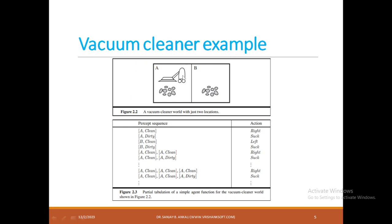Let us take an example. There is a vacuum cleaner and there are two rooms, A and B. Based on the agent function, the program has to operate. The agent function is a table which contains conditions and actions. First condition: if room A is clean, move to the right side. If A is dirty, initiate cleaning action. If B is clean, move to the left side. If B is dirty, initiate cleaning action. There might be hundreds of actions depending on the current state. This table is what we call the agent function, and the implementation is the agent program.